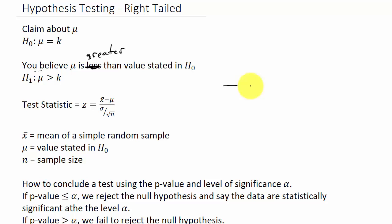Alright, so for a right-tailed test, that would be the area to the right of our test statistic z. And z is x bar minus mu over sigma divided by the square root of n, where x bar is the mean of a simple random sample.